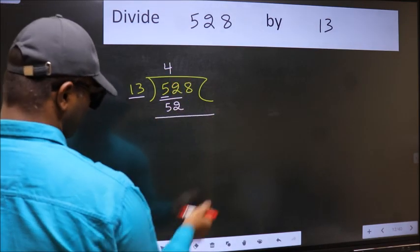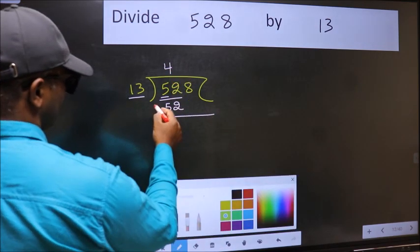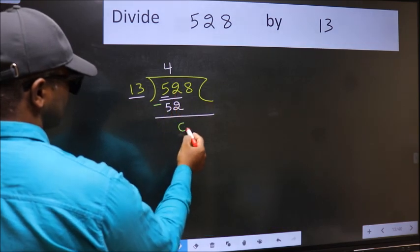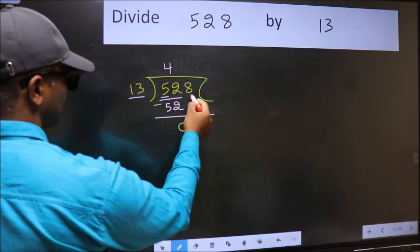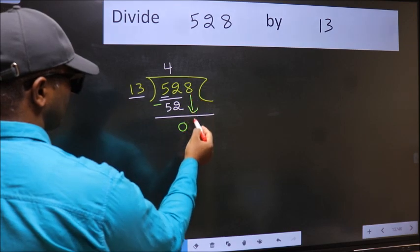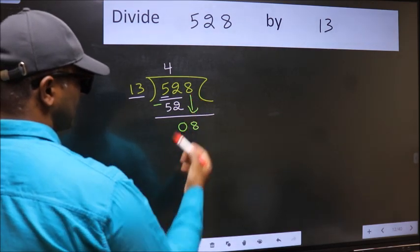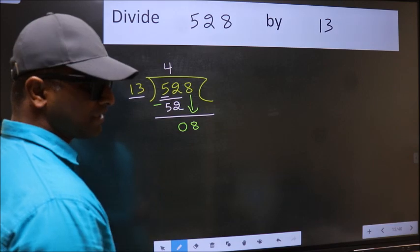Now we should subtract. 52 minus 52, 0. After this, bring down the beside number 8 down. After this step, the mistake happens.